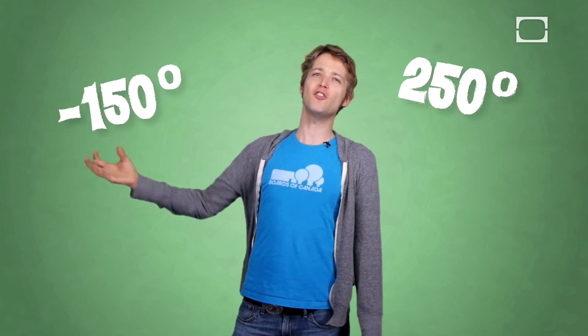The third thing that the suit has to do is control the astronaut's temperature. Now out in space, it is a balmy 250 degrees in the sun and a chilly minus 150 degrees in the shade. So you're going to wear long underwear laced with tubing that's filled with cooling water to keep everything chill.